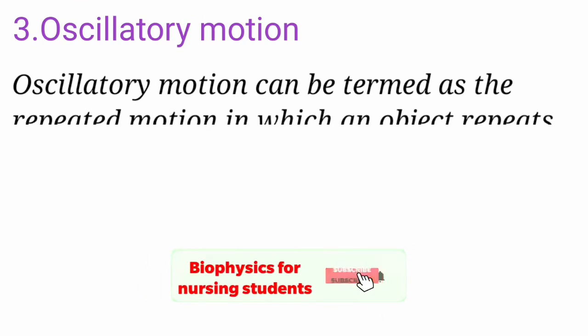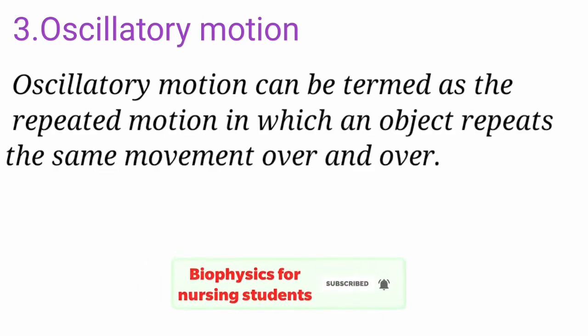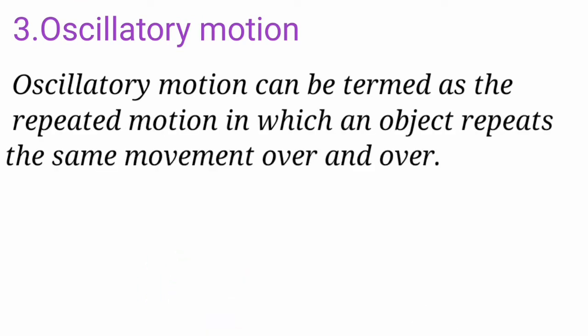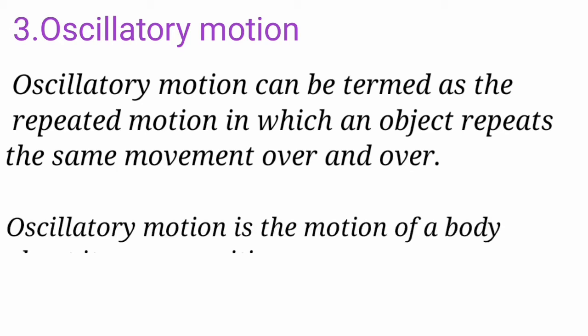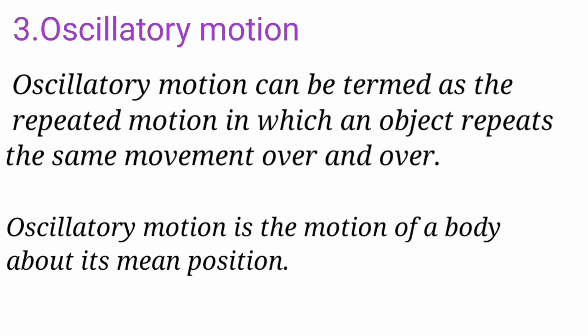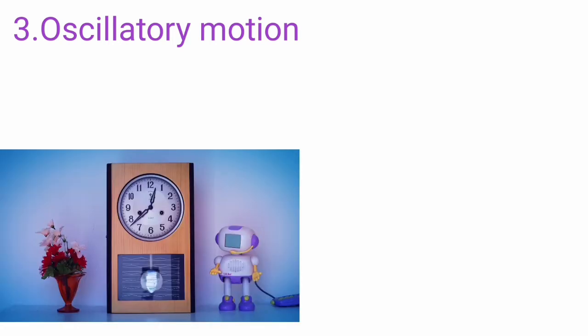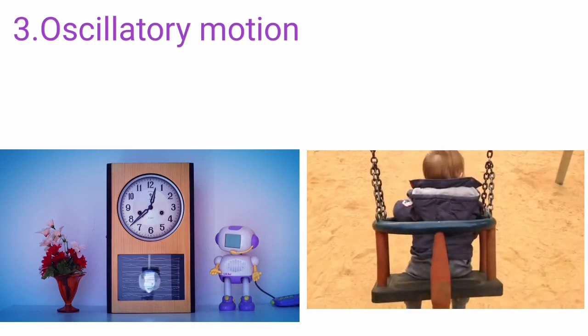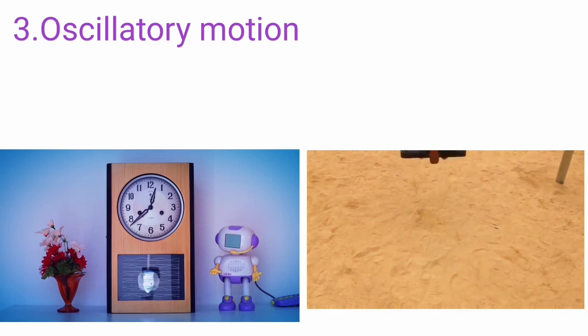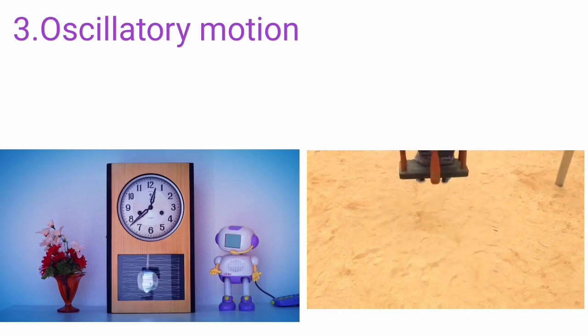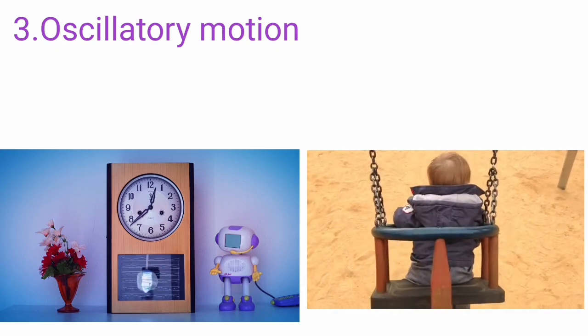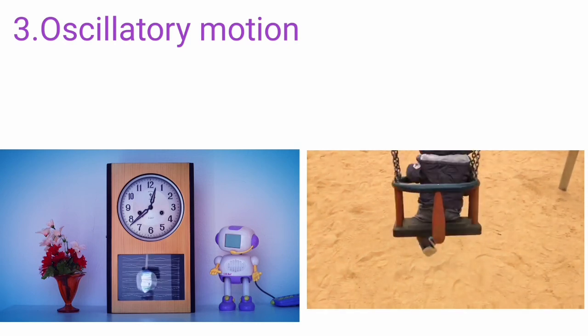Oscillatory motion is the movement of an object in the form of front and back oscillations, or movement of an object around its main position. Examples are the pendulum of a clock and a child on a swing — when the swing is pushed, it moves to and fro about its main position.